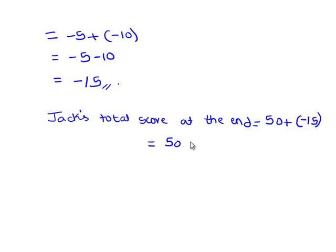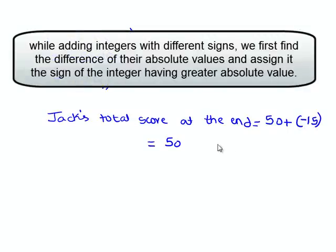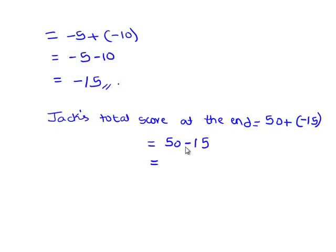That becomes 50 plus minus 15 becomes minus 15. 50 minus 15 is 35. Therefore, Jack's total score at the end is 35.